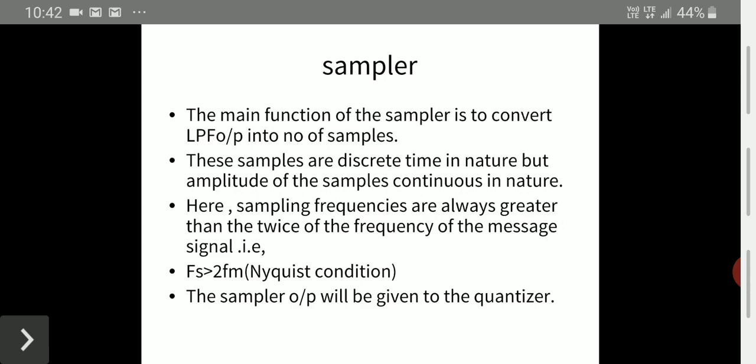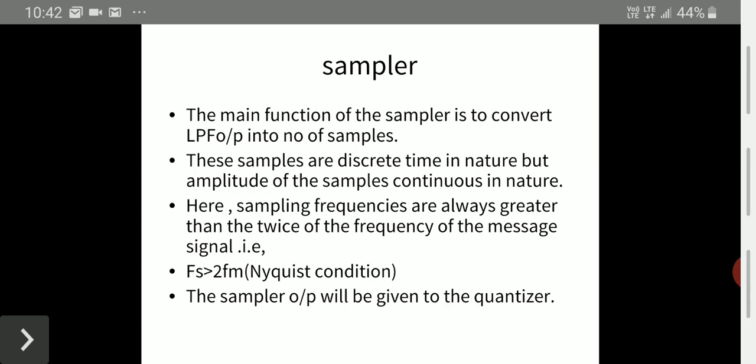The main functionality of the sampler is to convert the low pass output into a number of samples. These samples are discrete in time but continuous in amplitude. The sampling frequency must always be greater than twice the frequency of the message signal — this is the Nyquist condition: fs > 2fm.